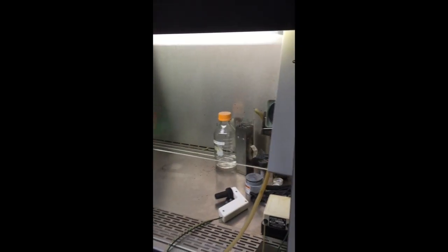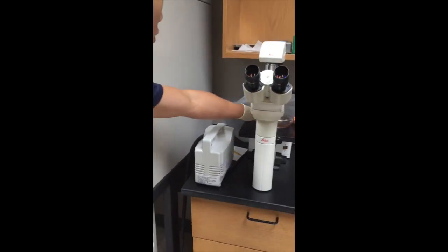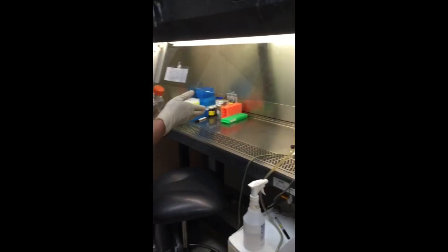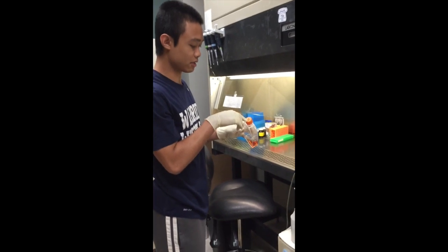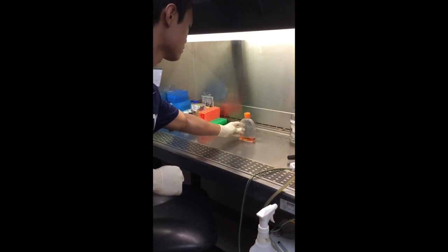Turn on the pipette aid. We're going to loosen the lid of the PBS, and take off the lid for the Pasteur pipettes. So everything gets sprayed before going into the hood, except for things that have cells in it.